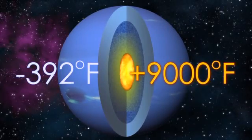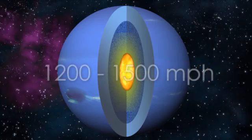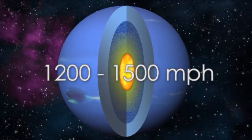This huge temperature difference between the core and the surface helps create the strongest winds in the solar system, reaching speeds of 1,200 to 1,500 miles per hour.